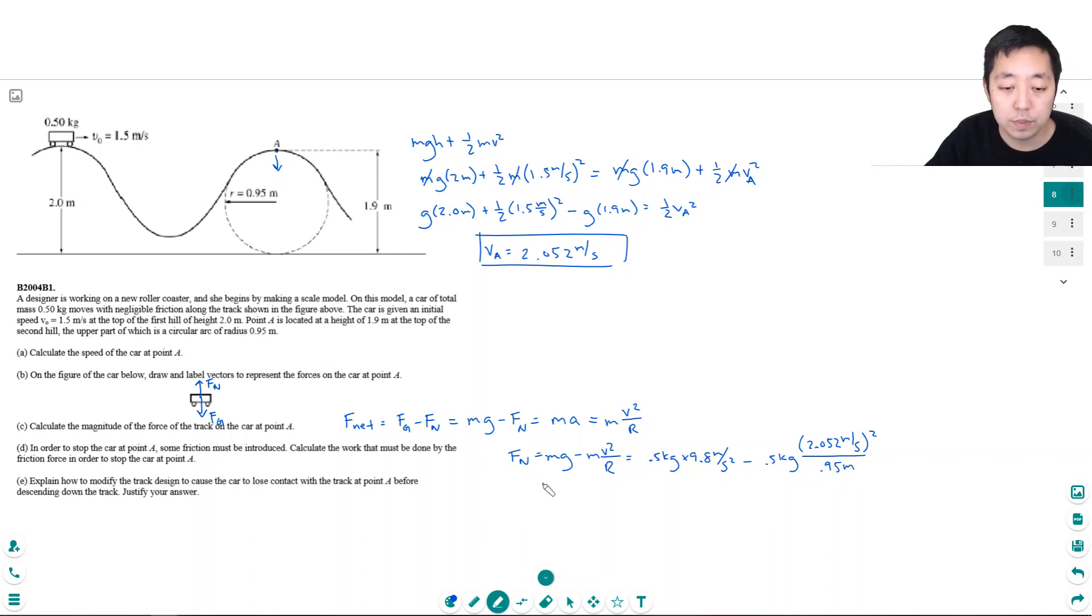So 0.5 times 9.8 minus 0.5 times 2.052 squared divided by 0.95. I get 2.68 Newtons.